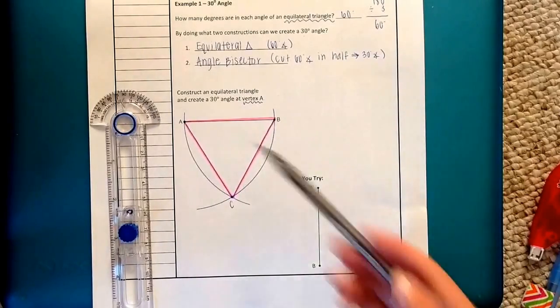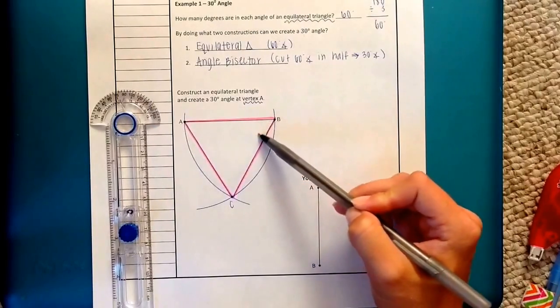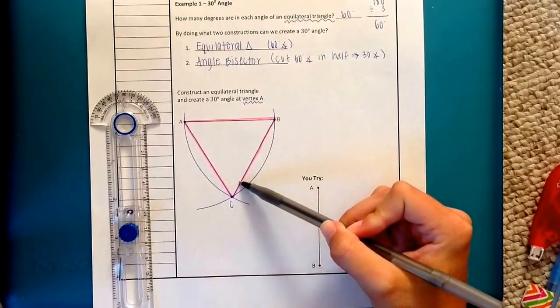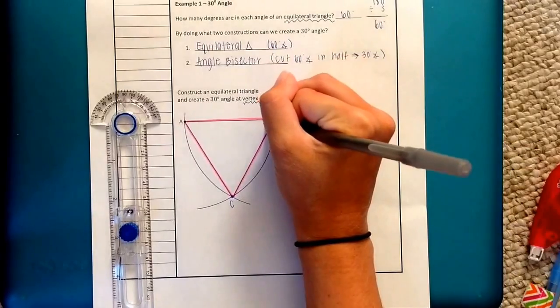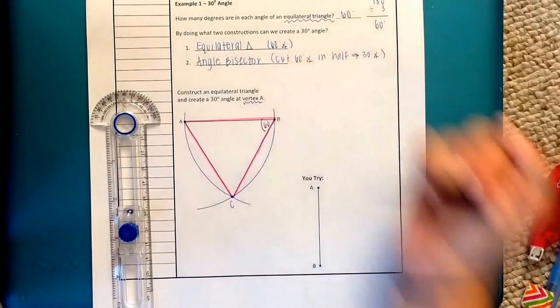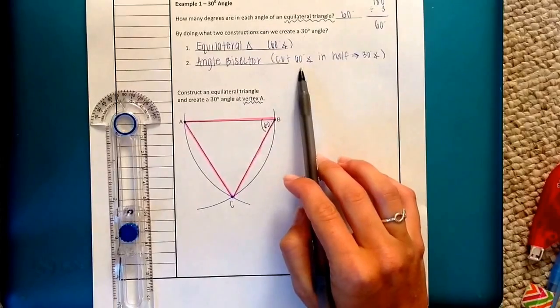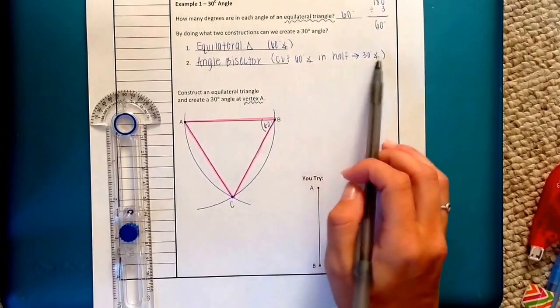So right now what we know is that each of these angles, angle A, angle B, and angle C are all 60 degrees. In fact I'm going to label angle B as 60. You could also label angle C. I don't want to quite label angle A yet because we're going to cut it in half. Remember that's the point here. We're cutting 60 in half to create 30.